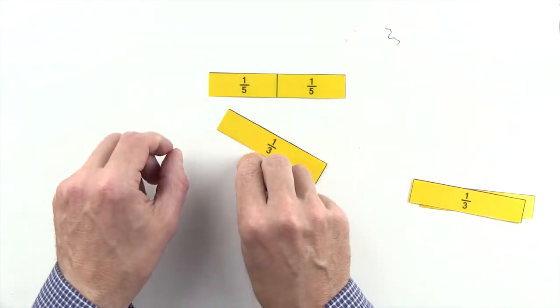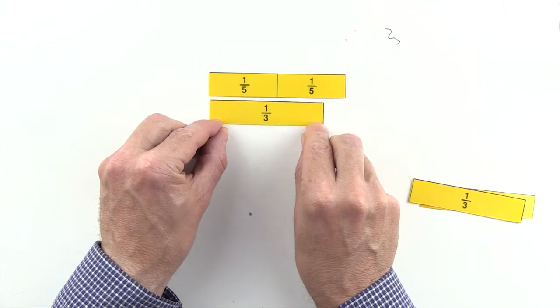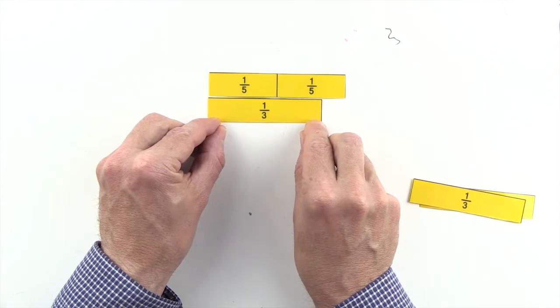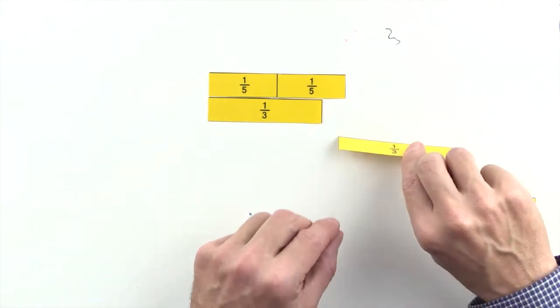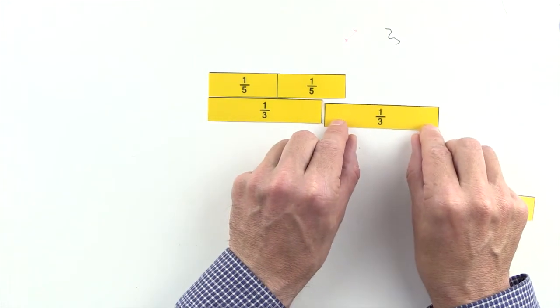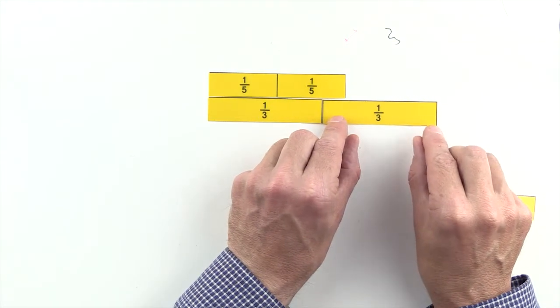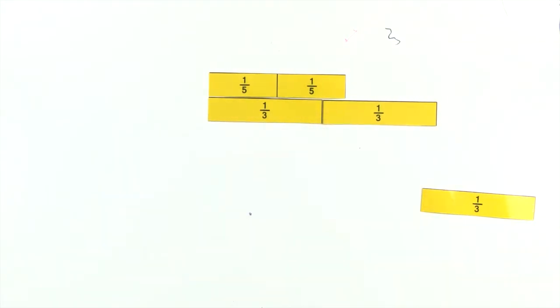One-third is less than two-fifths, and two-thirds are greater than two-fifths, so we can't use thirds to make an equivalent fraction to two-fifths.